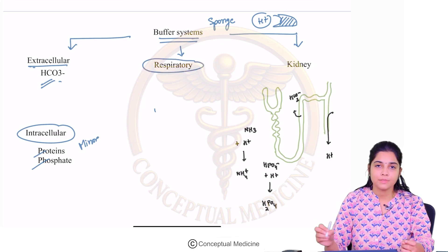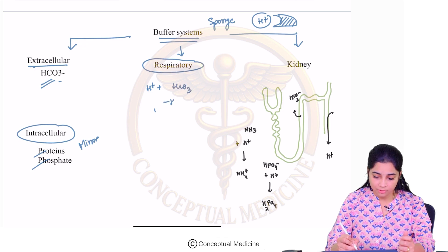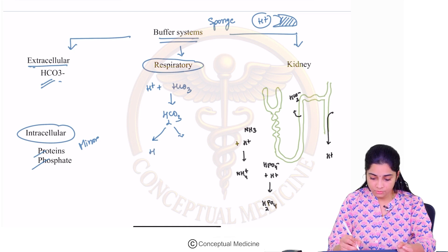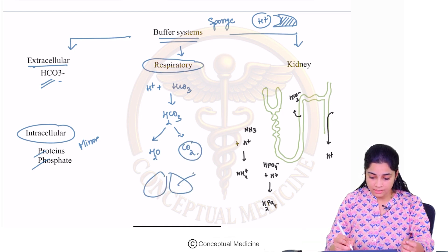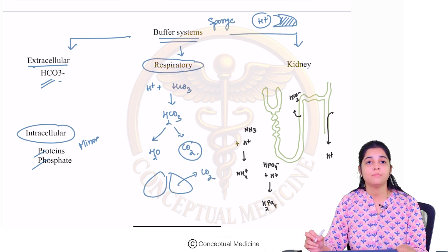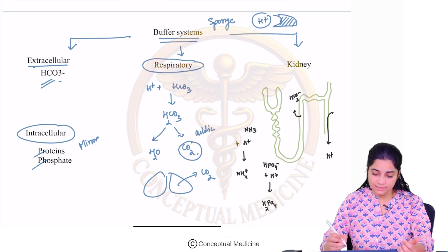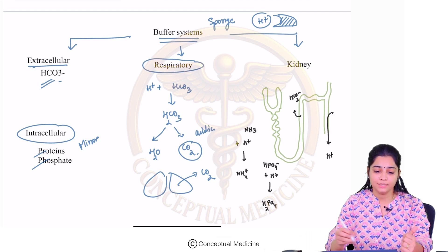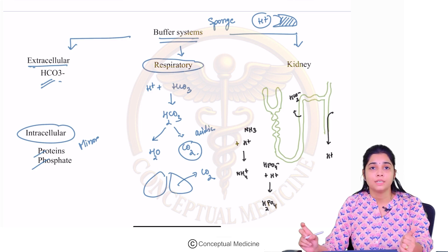The respiratory buffer system works as follows: H+ ions combine with bicarbonate and form H2CO3, which is then broken down into H2O and CO2. This CO2 is excreted from the lungs. So the respiratory buffer system involves carbon dioxide excretion. Carbon dioxide is basically an acidic gas, so whenever there is excess acid in the body, it is buffered by extracellular bicarbonate, broken down into carbon dioxide, and exhaled from the lungs.